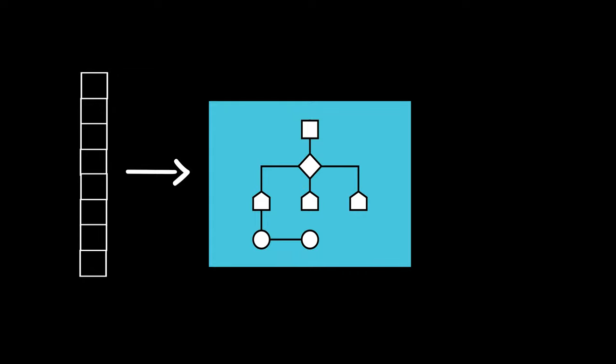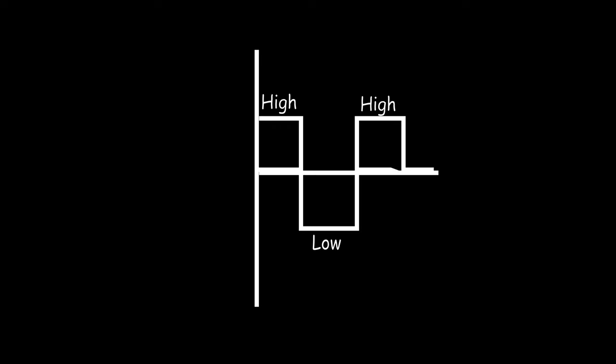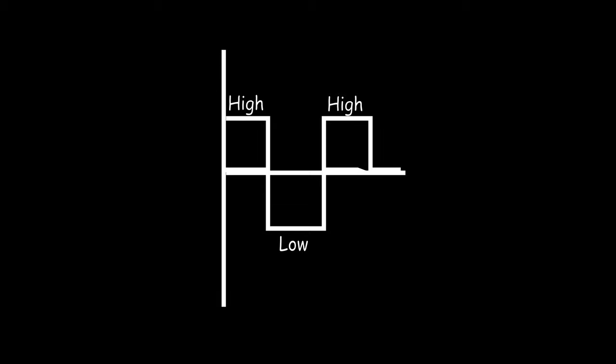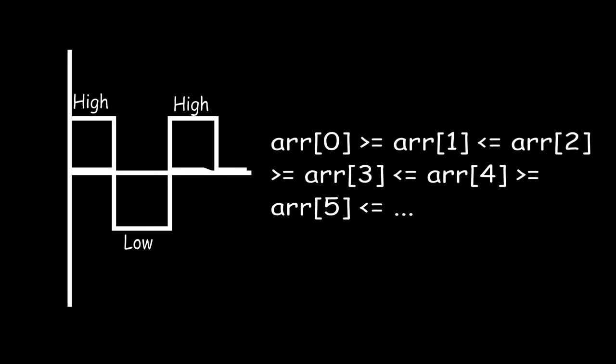You are given an array arr and tasked to develop an algorithm which sorts the elements of the array in terms of a waveform. A wave has ups and downs — high and low. The output array's first element should be greater than or equal to the second element, and the second element should be less than or equal to the third element.